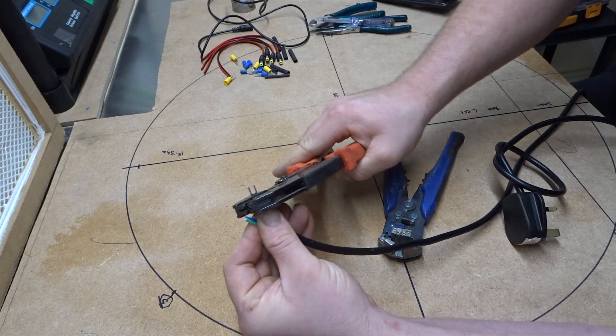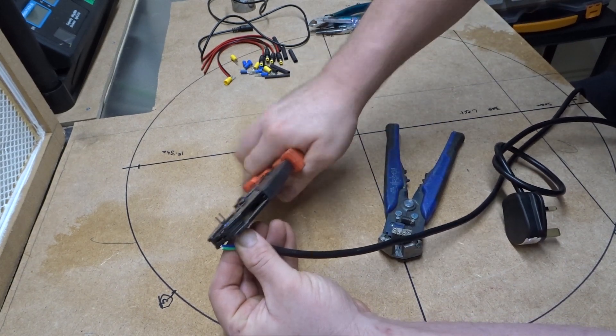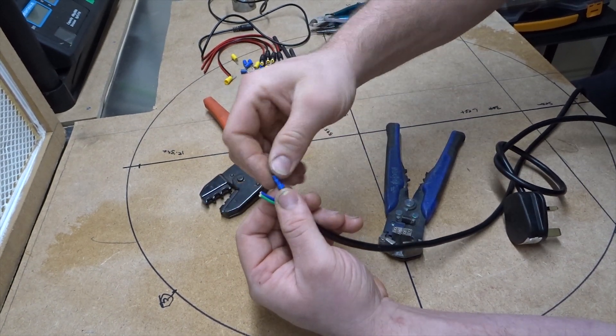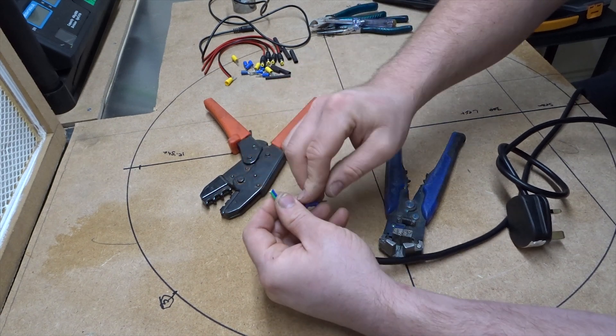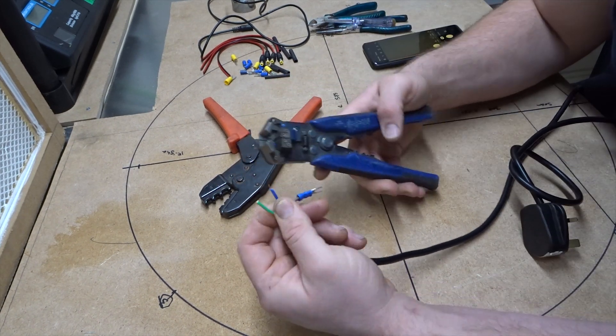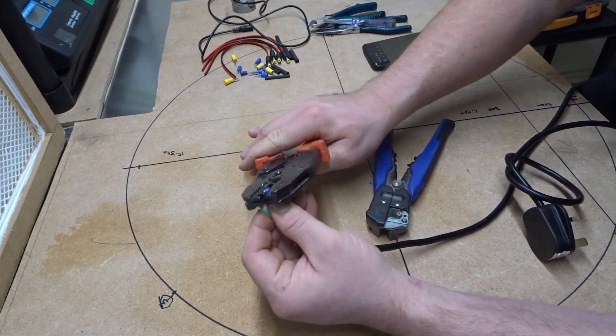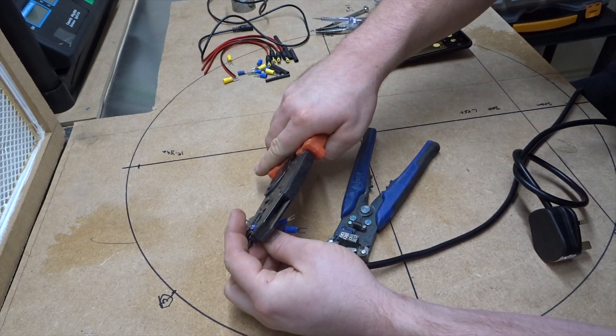So we'll pop him in, force him up to the end. Squeeze, click, release. She ain't going nowhere. So we'll just repeat that. And then neutral is obviously blue.